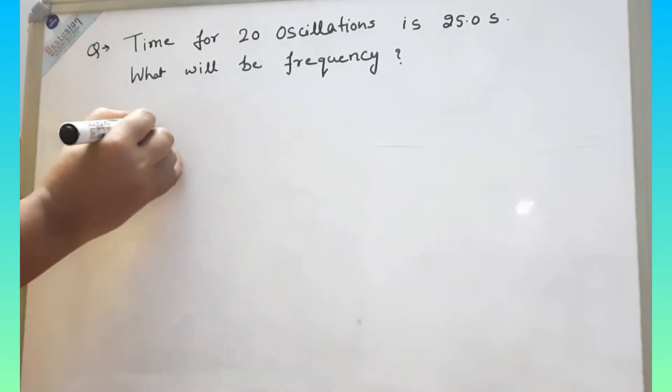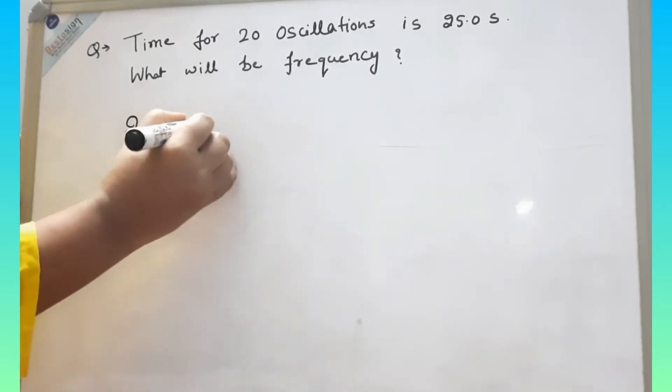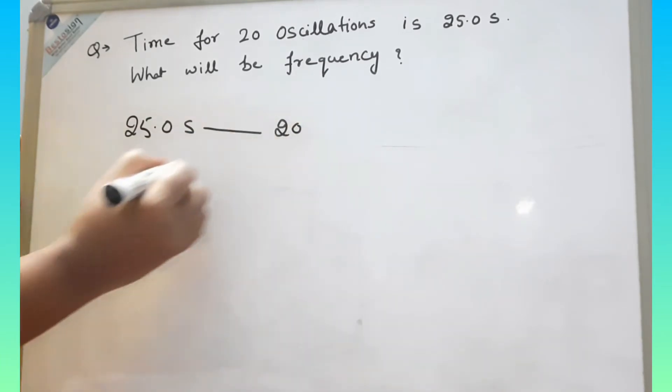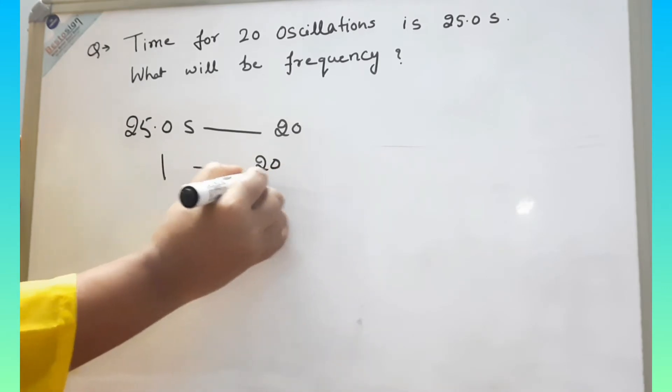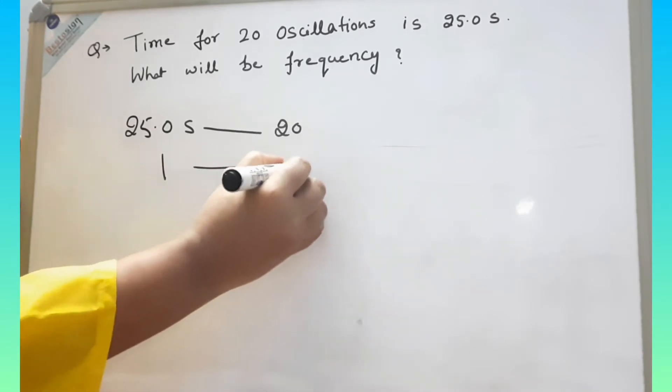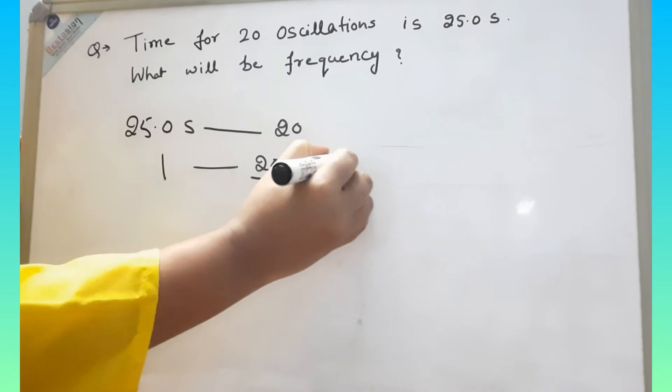25 second, oscillation is 20 times. So for 1 second, it will be 20 by 25. So it will be 0.8.